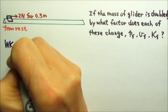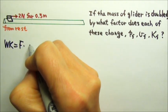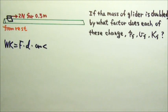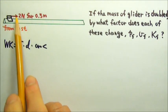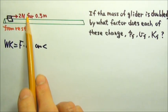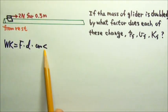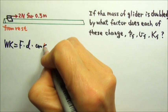Because the work done by a force is the force times the displacement times cosine the angle between the two. In this case, the force and the displacement are going to be in the same direction. So this is cosine 0 degrees.